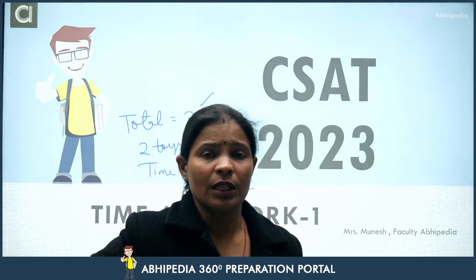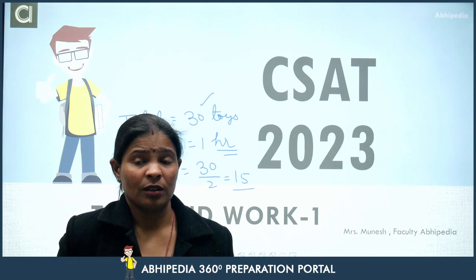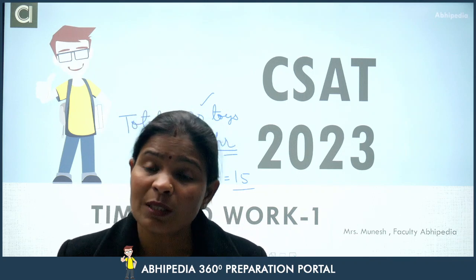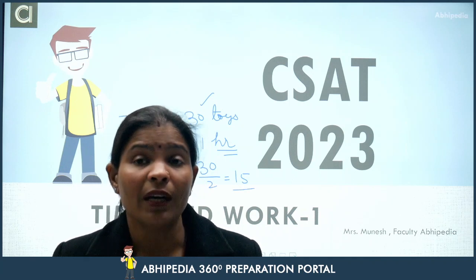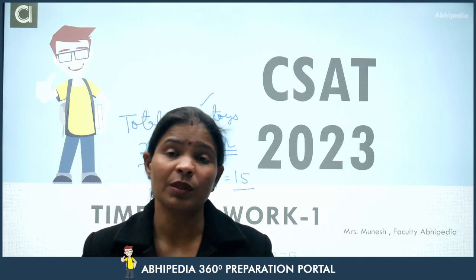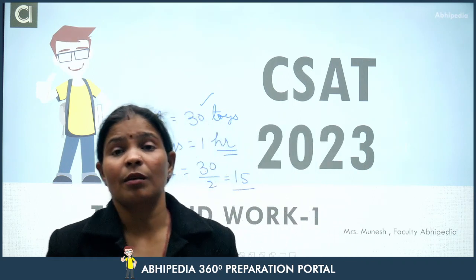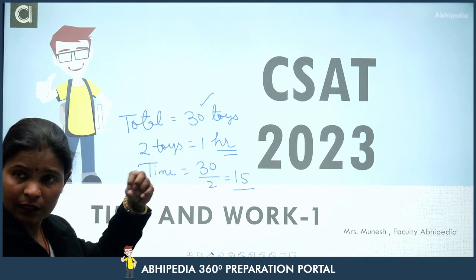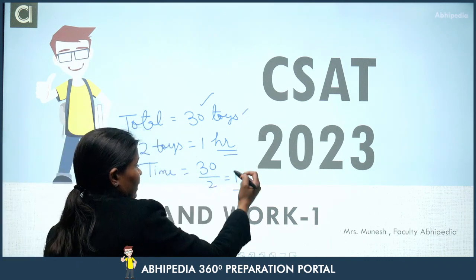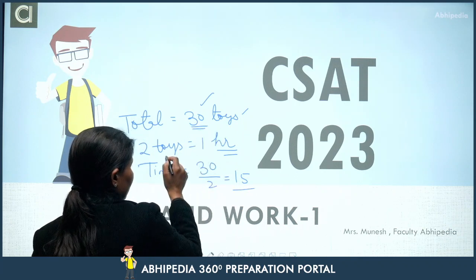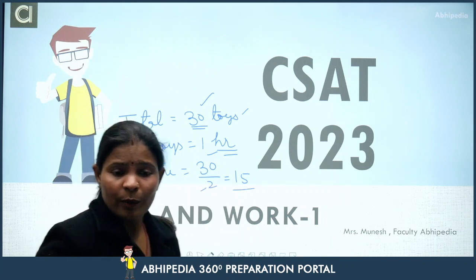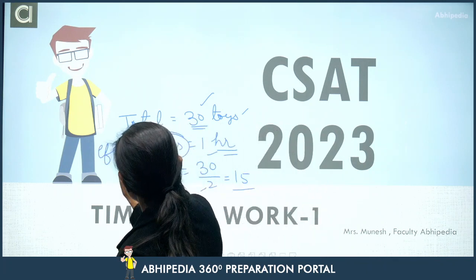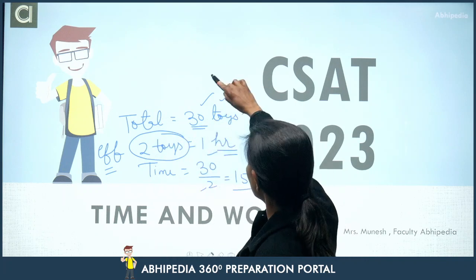When we become fully dependent on formulas, we become logically weak. You should become logically strong, because in the CSAT paper, it's not that you shouldn't learn formulas, but you should prepare each subject logically. All questions in today's papers are logical. So from this example: the 2 toys per hour is my efficiency, and the 30 toys is my total work.